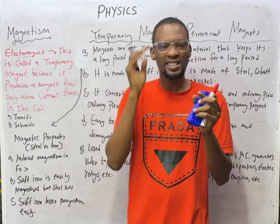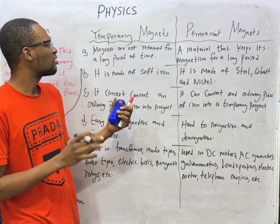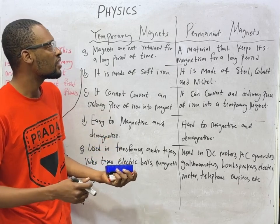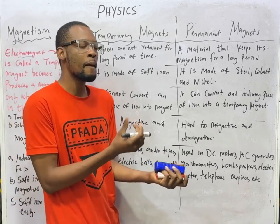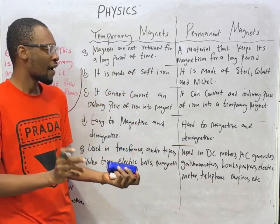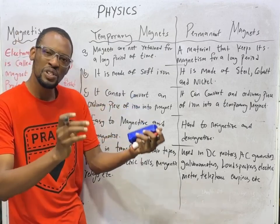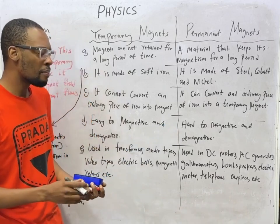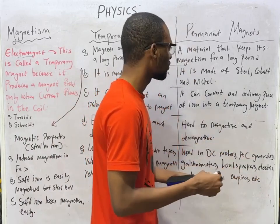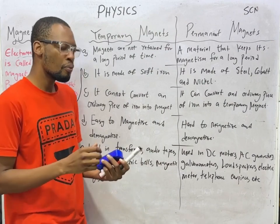Temporary magnets do not retain their magnetism for a long period of time, while a permanent magnet keeps its magnetism for a long period of time. Temporary magnets are made of soft iron, while permanent magnets are made of steel, cobalt, and nickel — abbreviated SCN.